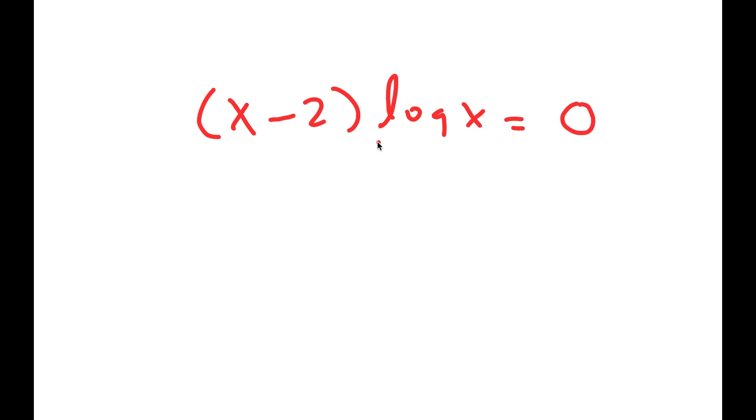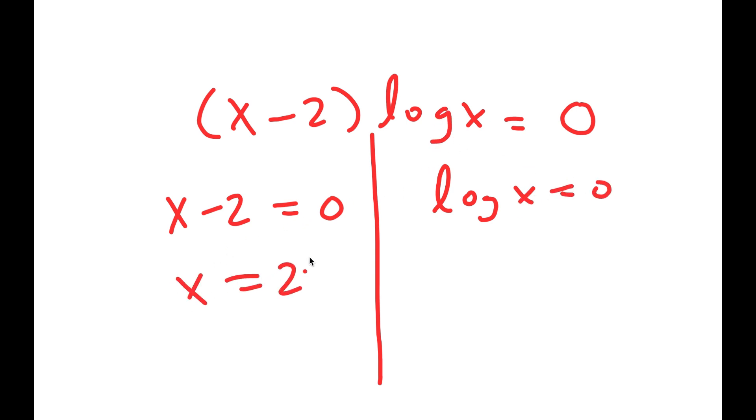So now I get two equations. I get x minus 2 is equal to 0, and log of x is equal to 0. So this means that x is equal to 2.